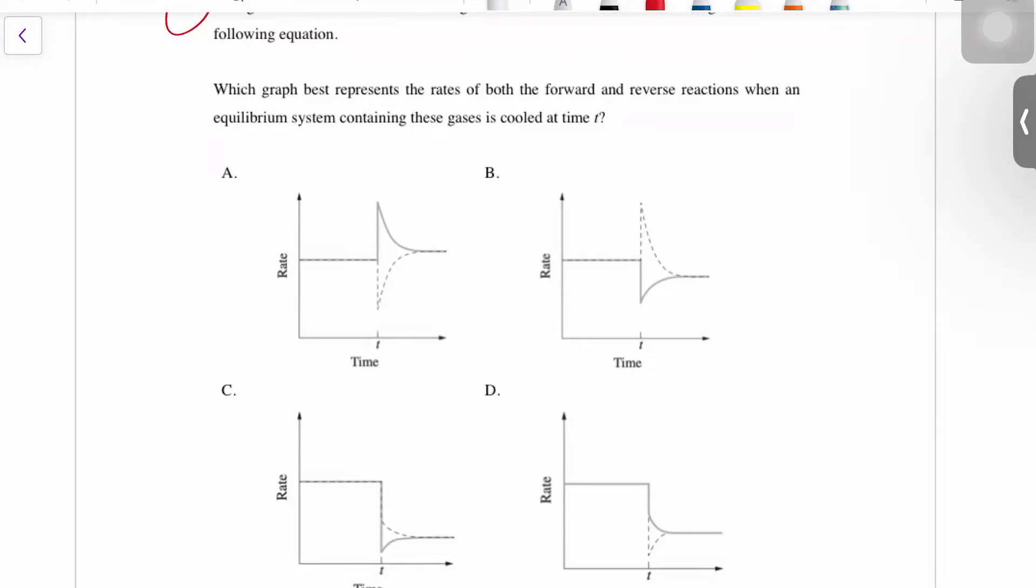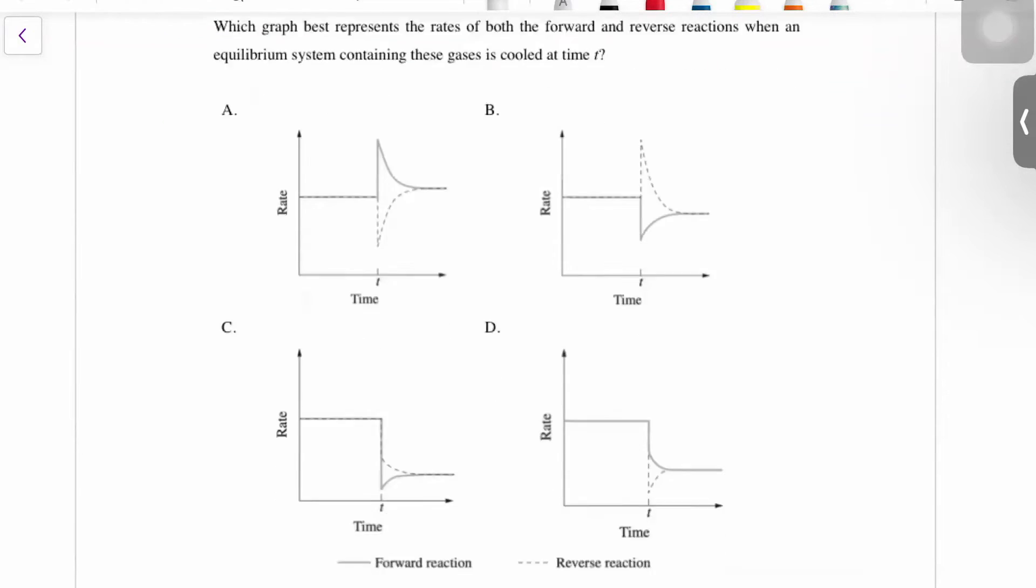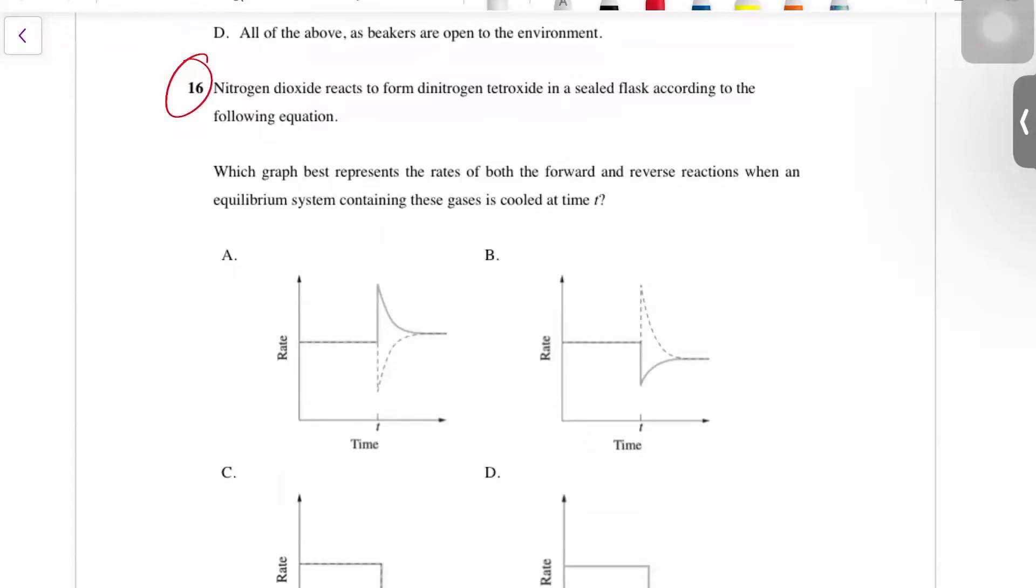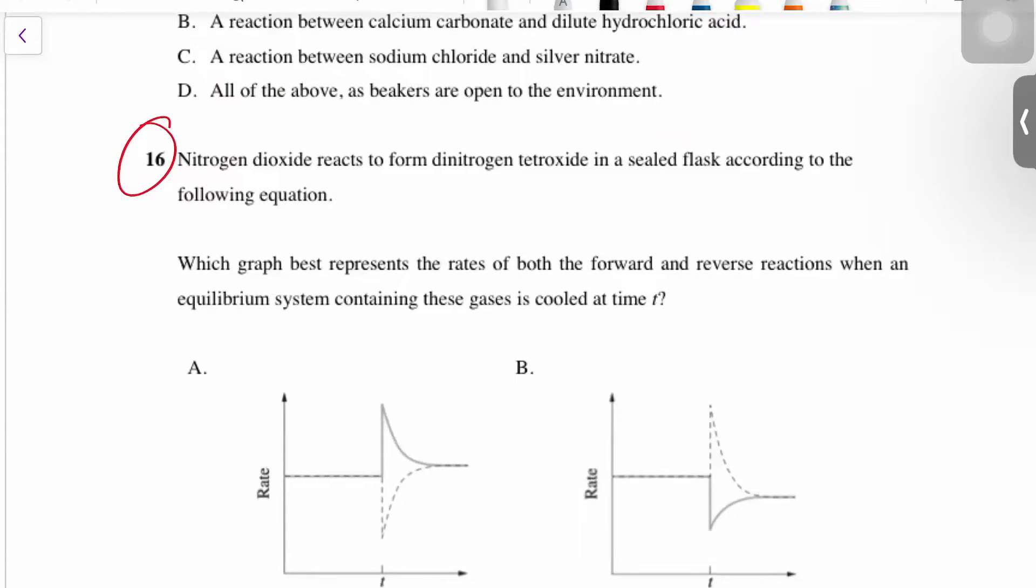Which graph best represents the rates of both the forward and reverse reactions when an equilibrium system containing these gases is cooled at time T? We'll talk about the graph in a second, but first of all, help me with the equation here.